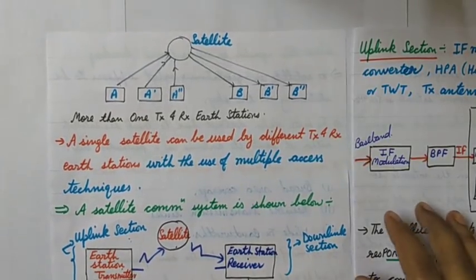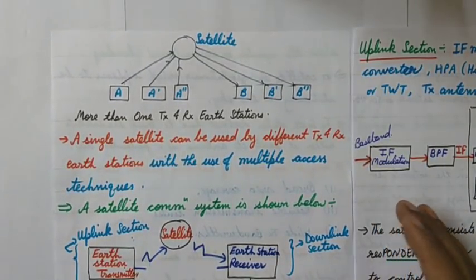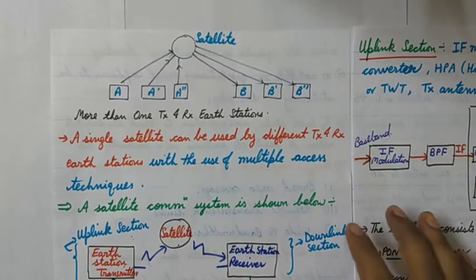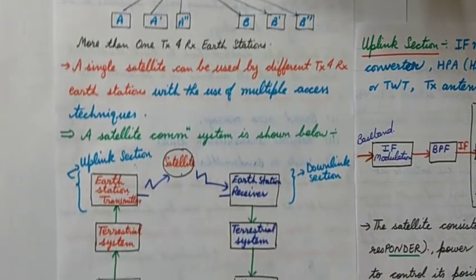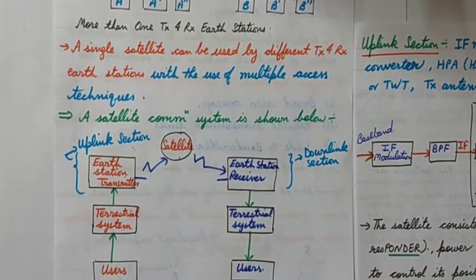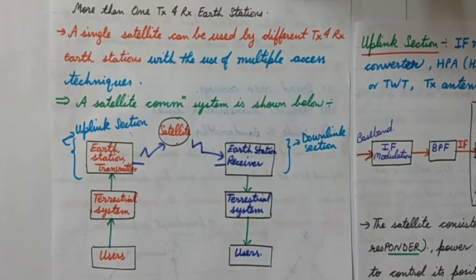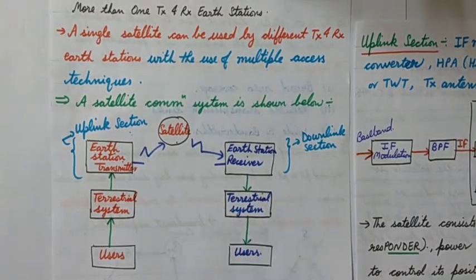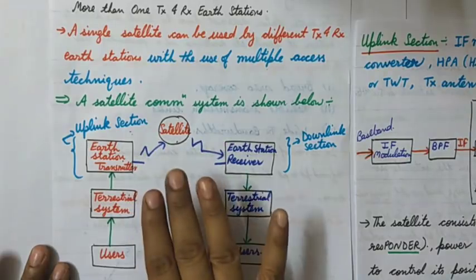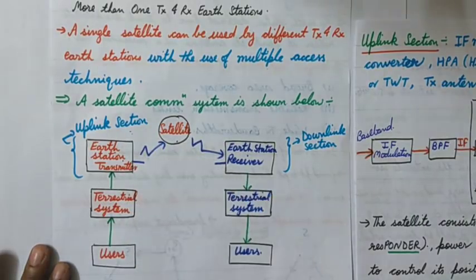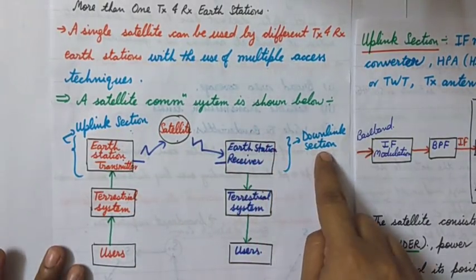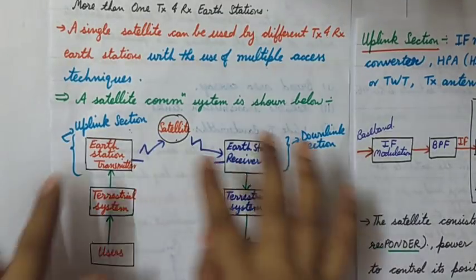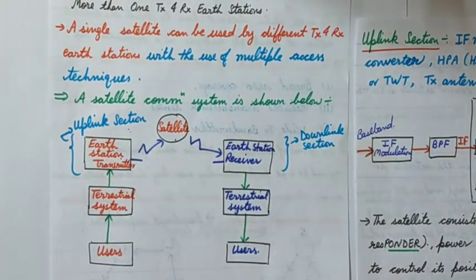Hello students. We were talking about satellite communication. In the last video we saw the block diagram of satellite communication, which has an earth station transmitter — the uplink section — the satellite with its main part, the transponder, and the earth station receiver — the downlink section. We'll see these three main parts of satellite communication in detail.